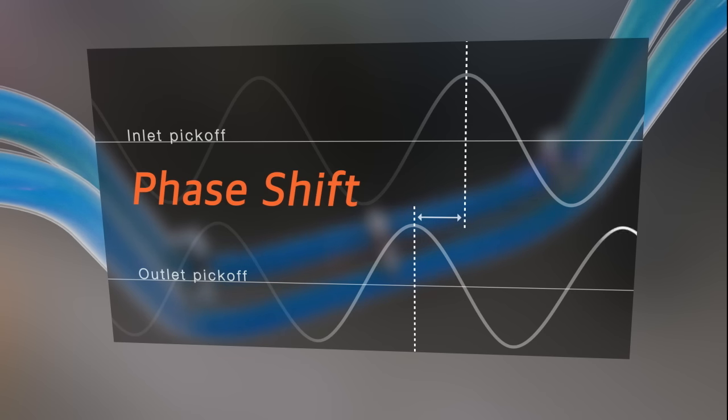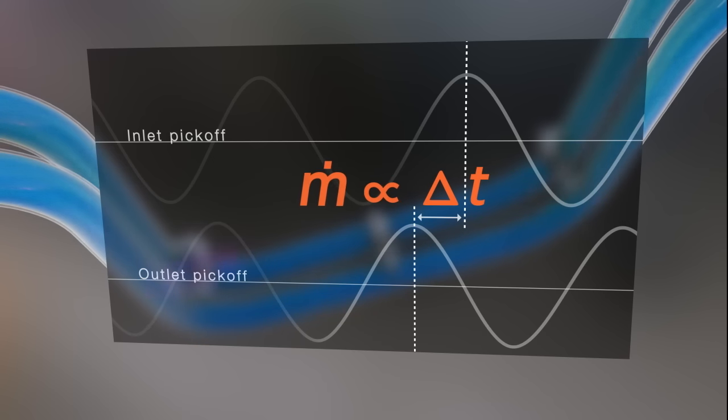The time delay between the two sine waves is measured in microseconds and is called delta T. Delta T is directly proportional to the mass flow rate. The greater the delta T created by the Coriolis force, the greater the mass flow rate.